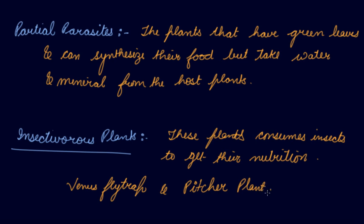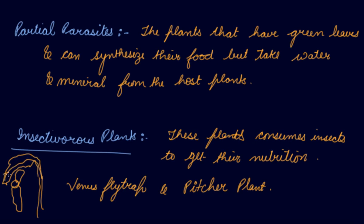The pitcher plant has a special leaf structure shaped like a pitcher. It has a lid over the opening, and this structure is connected to the leaf of the plant. Whenever any insect comes inside this structure, the lid closes to trap the insect.